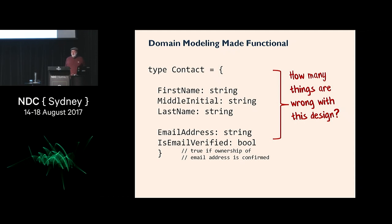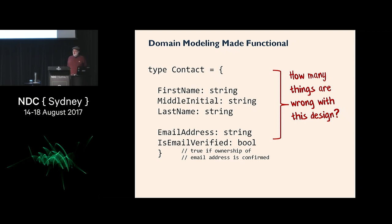How many things are wrong with this design? You've probably written code like this many times, where you have some sort of contact or customer type, and they've got a name, an email, and all this kind of stuff. Do you think this is a good design? What kinds of things would be wrong with it?